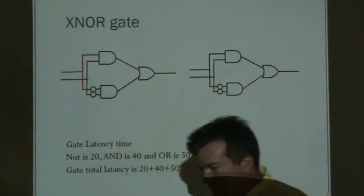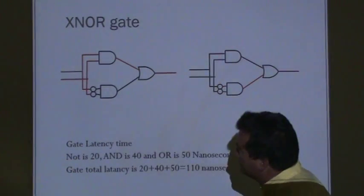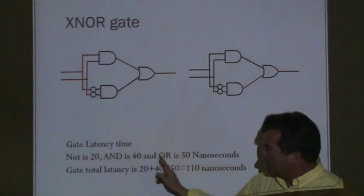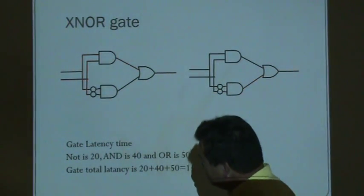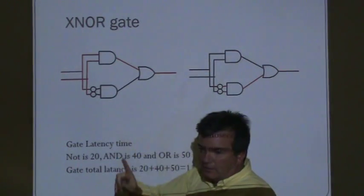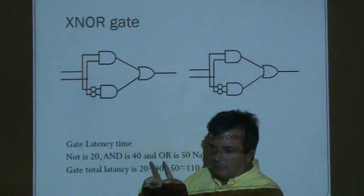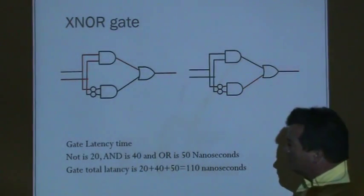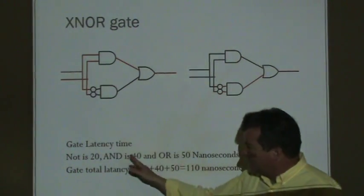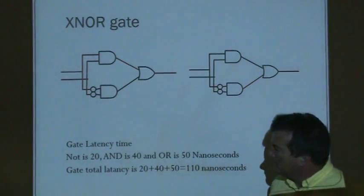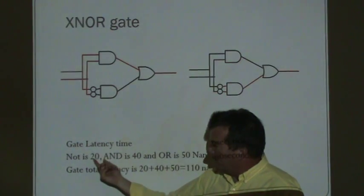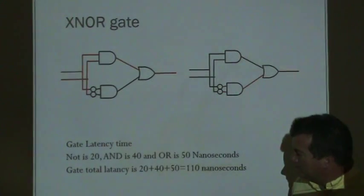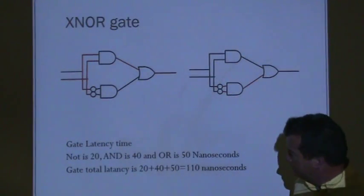One thing that's going to become important is the speed at which answers come out — some of these pieces of hardware we're building for the processor are very speed-sensitive. We also want to talk about gate latency. Suppose it takes 20 nanoseconds to have a value go through a NOT gate and have its proper output come out — it has to go through a transistor and a resistor and flow through. Suppose AND gates take 40 nanoseconds and OR gates take 50 nanoseconds.